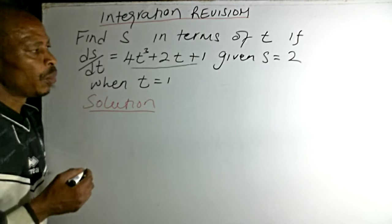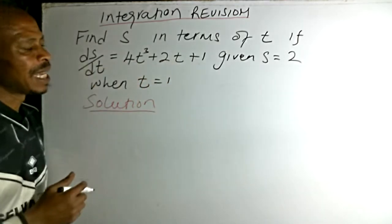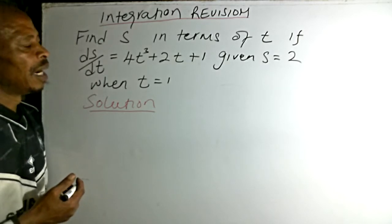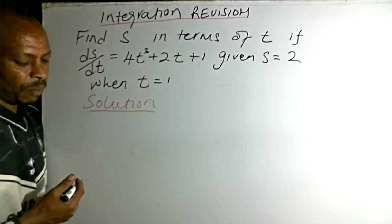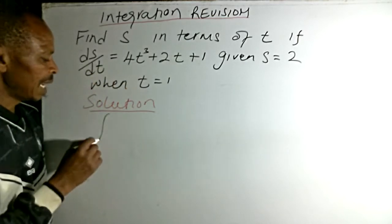This expression was obtained as a result of a function which was differentiated, a function of s in terms of t. So what we need to do is integrate this.